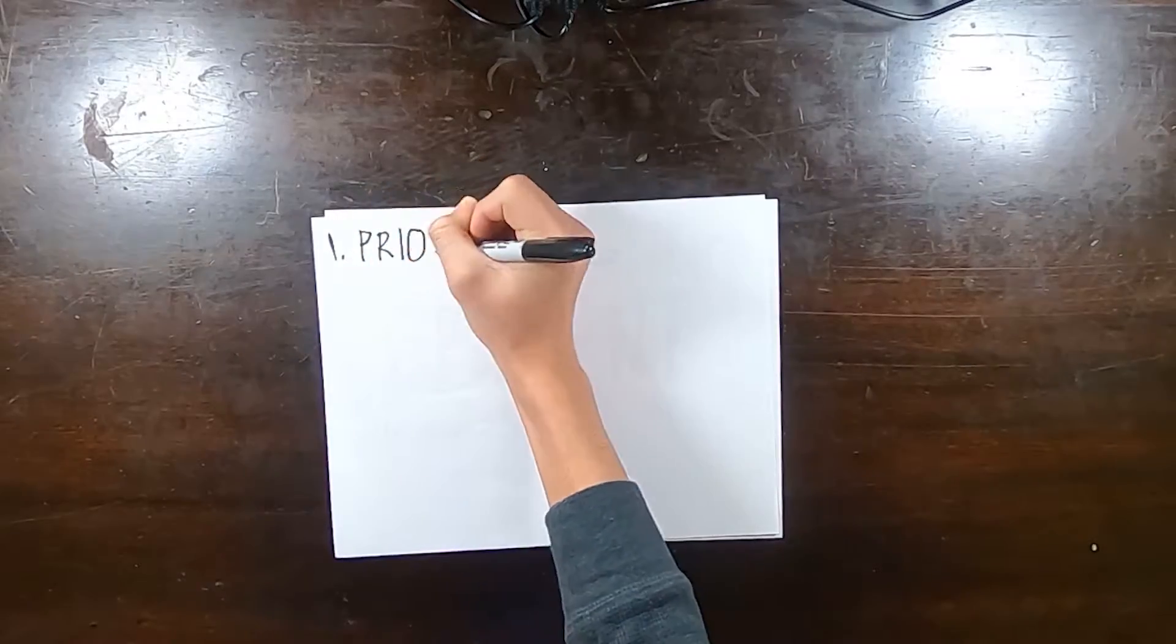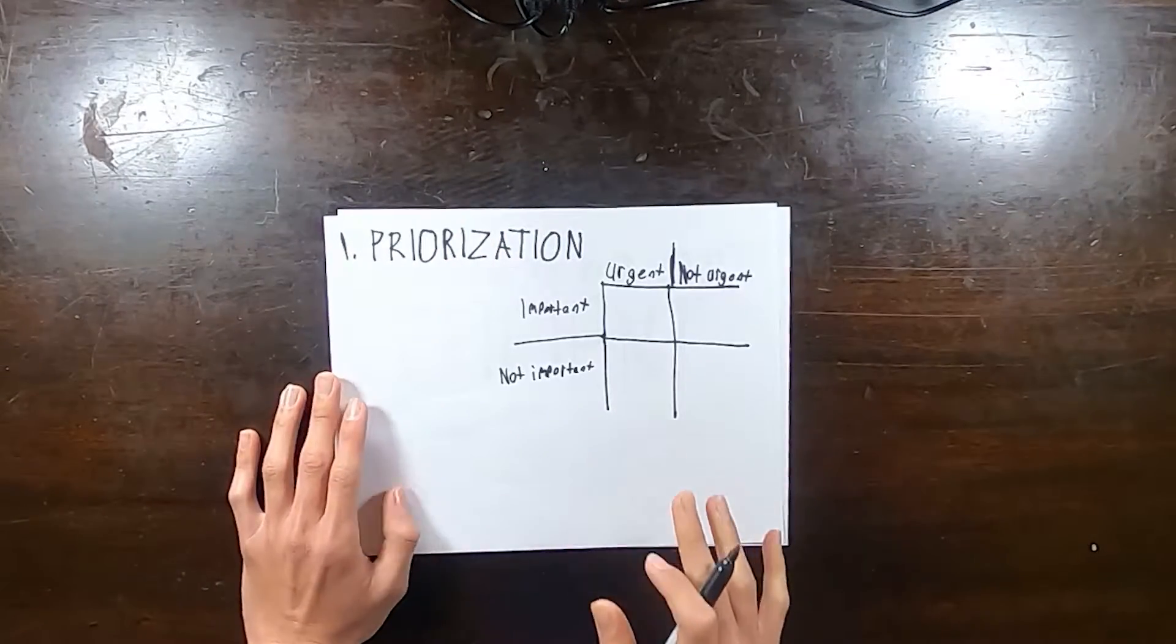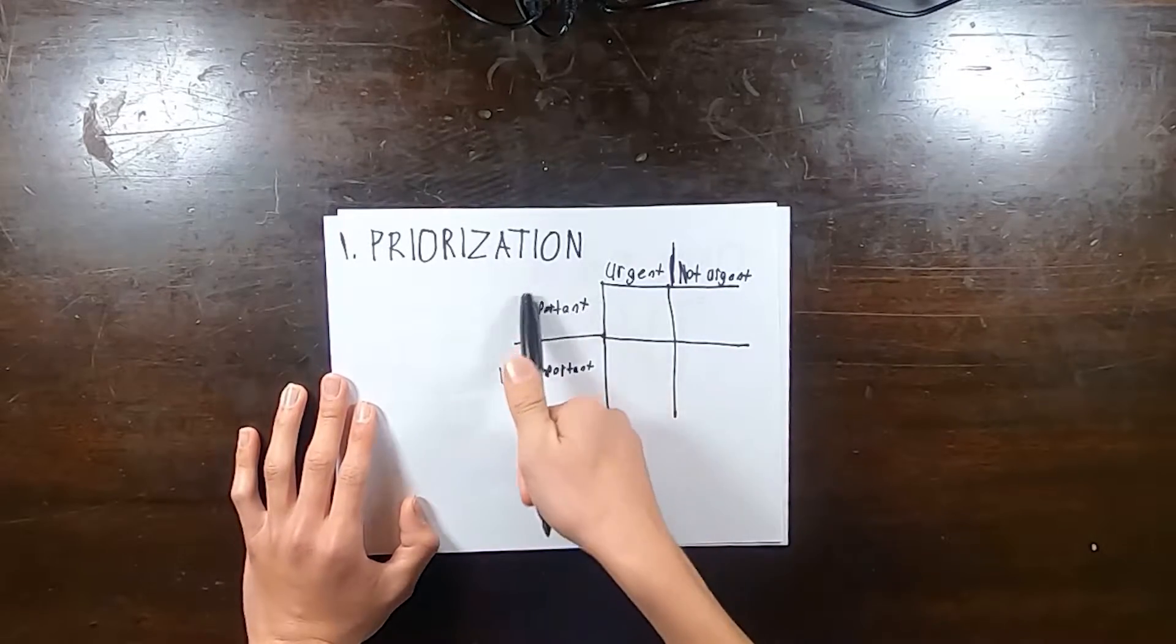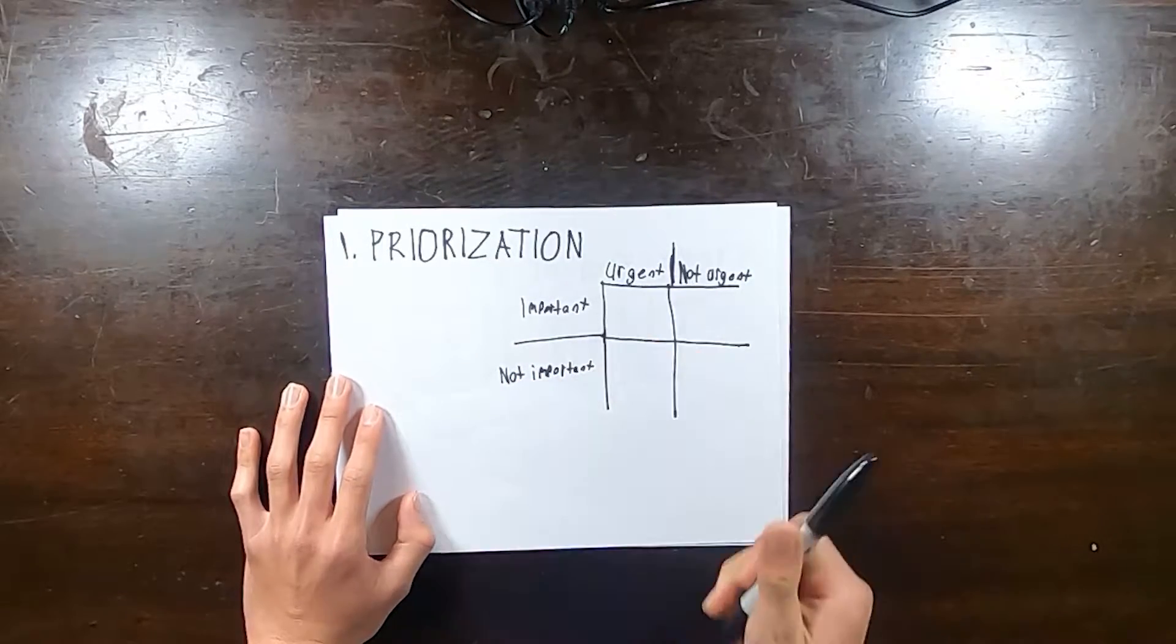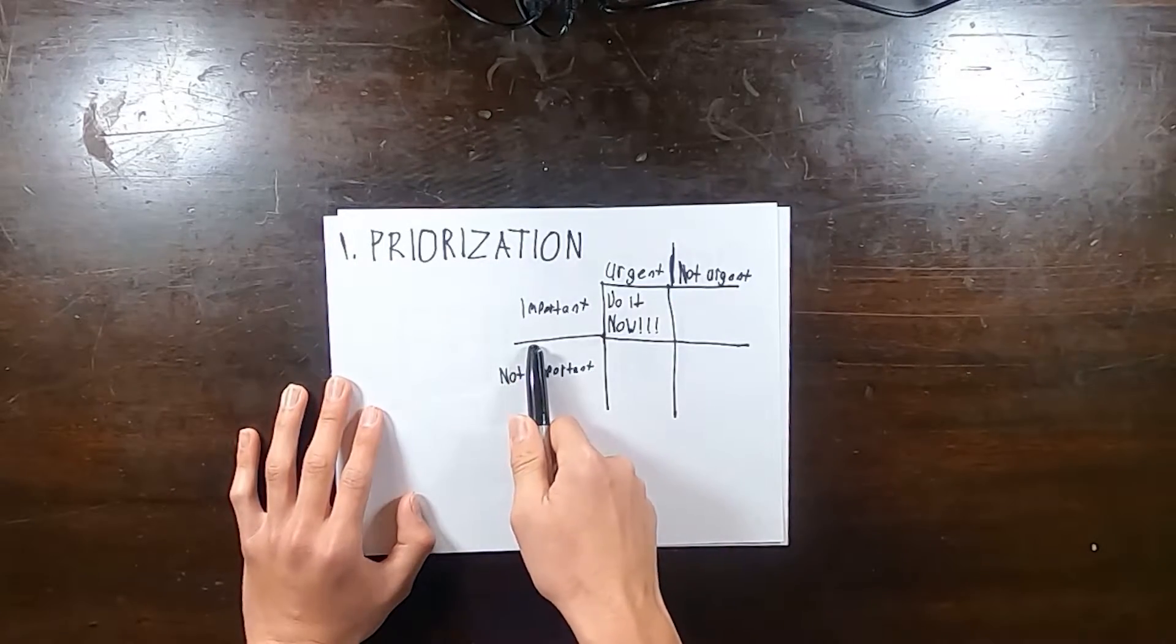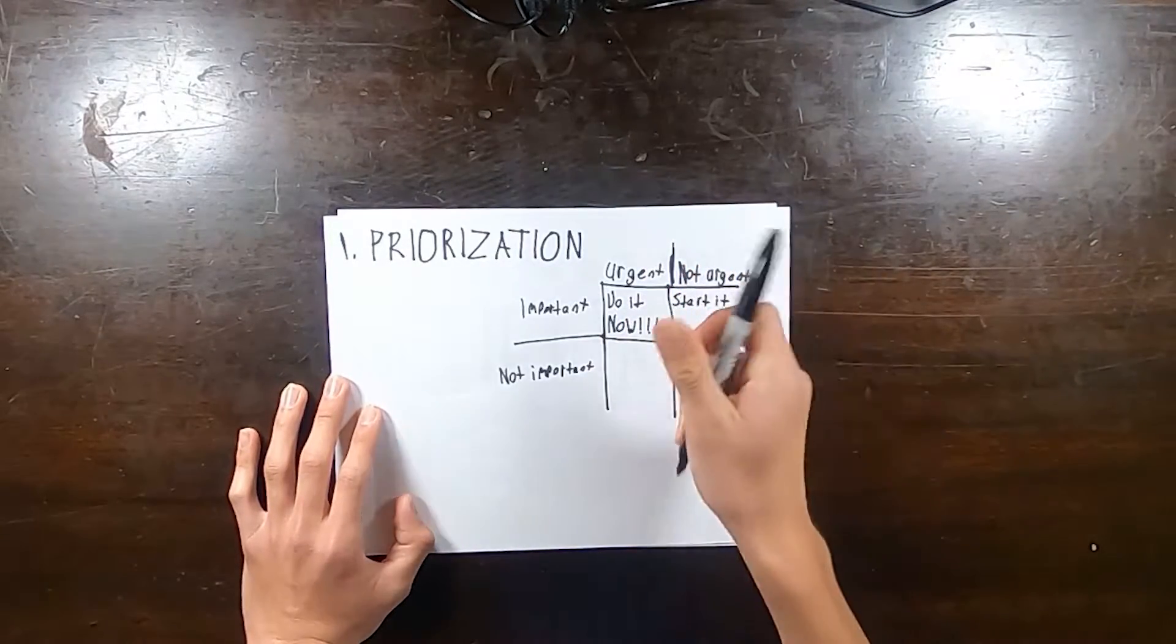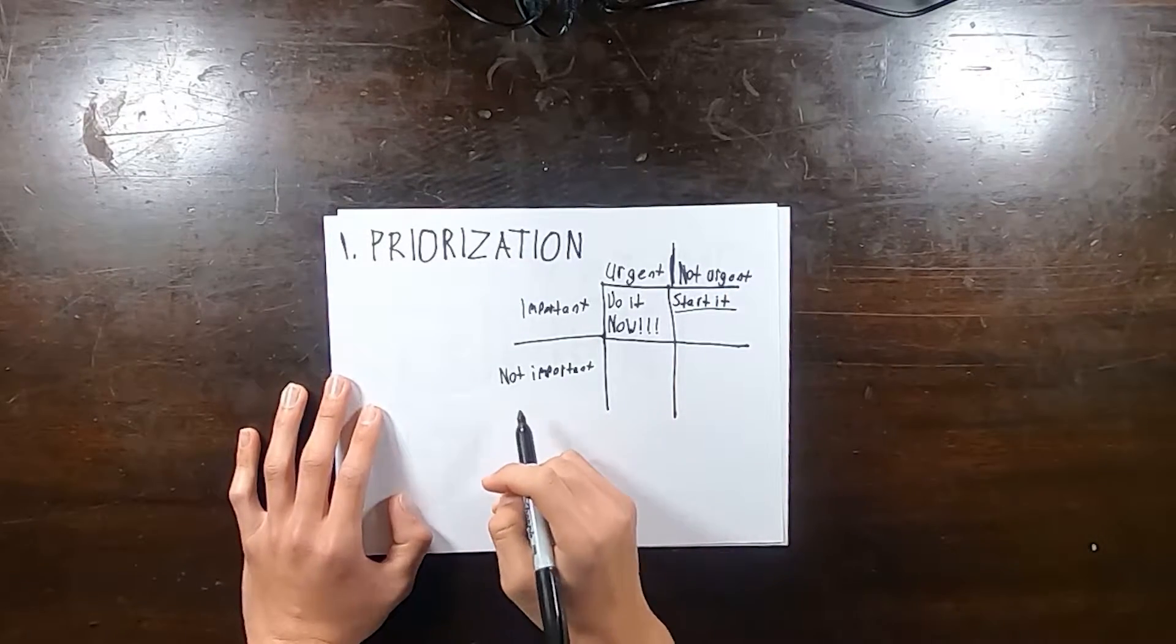Prioritize what's most important to you. Say I have a school assignment, something that's coming up, and it's important. Say it's a big project, a hundred point project, and it's urgent, say it's due in two days. I got to do it now. If it's important but not urgent, that comes second. Start it but don't finish it. Get this done first, finish this, then start this.